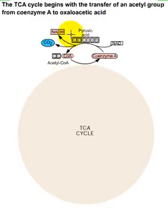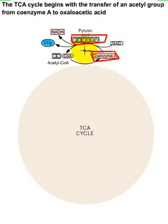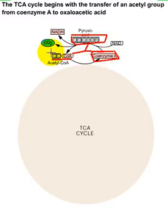Pyruvic acid has been produced through the process of glycolysis in the cytoplasm. This pyruvic acid will combine with coenzyme A, and as a result, they will produce acetyl coenzyme A. This acetyl coenzyme A contains a 2-carbon molecule, and we're going to look at what happens to this 2-carbon molecule.